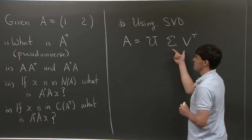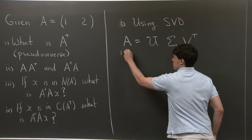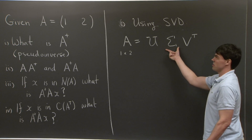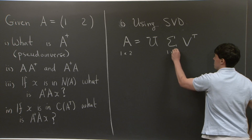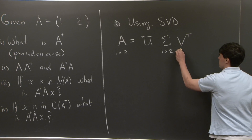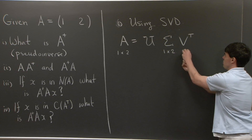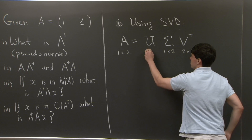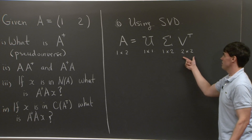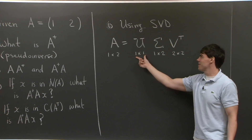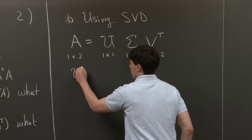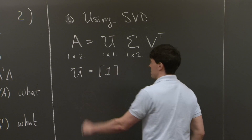Let's look at the dimensions. A is a 1 by 2 matrix. I usually start with the center matrix sigma, which always has the same dimensions as A — so it's 1 by 2. U and V are always square matrices. To make the multiplication work out, V needs to be 2 by 2, and U has to be 1 by 1. Because the only orthogonal 1 by 1 matrix is just 1, U is simply the 1 by 1 identity matrix.